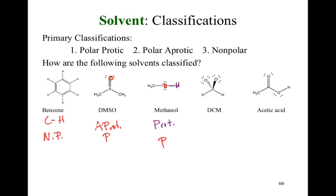DCM gets a little tricky because chlorines are electronegative, but not as electronegative as oxygen. So DCM falls at an intermediate polarity between polar and nonpolar. It will still be aprotic because no hydrogen is connected to an electronegative element. Moving to acetic acid — electronegative oxygen, so it's polar, and a hydrogen connected to that oxygen, making it a polar protic solvent.